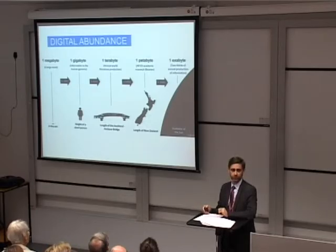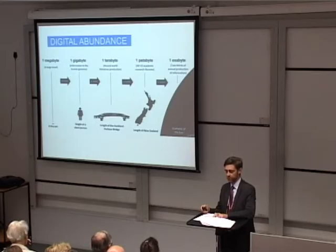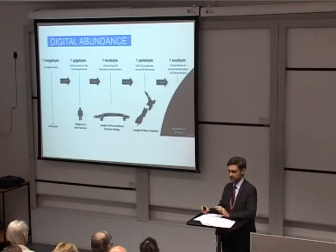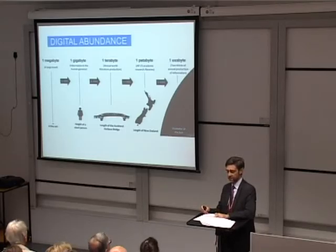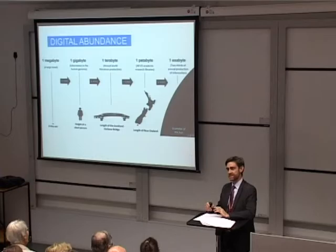Buckminster Fuller came up with what he called the knowledge doubling curve. Until about 1900, human knowledge doubled approximately every century. By the end of World War II, knowledge was doubling about every 25 years. Today knowledge doubles at different rates in different technical areas — nanotechnology doubles every two years, clinical knowledge every 18 months, but on average human knowledge is doubling every 13 months. According to IBM, when the Internet of Things is fully built out, this will lead to a doubling of knowledge every 12 hours.